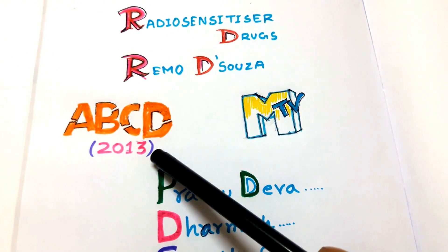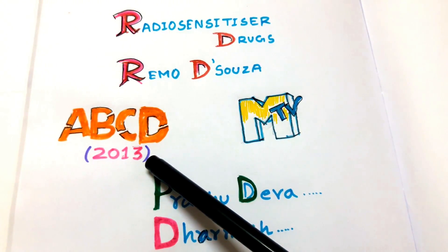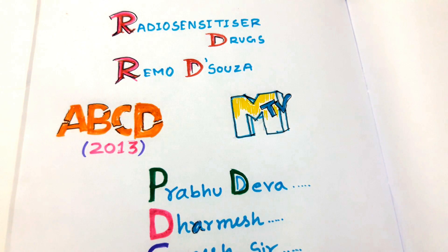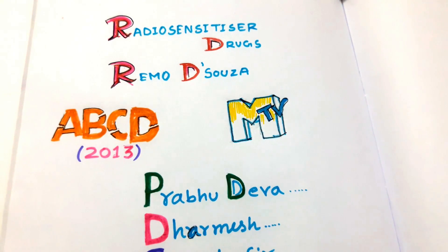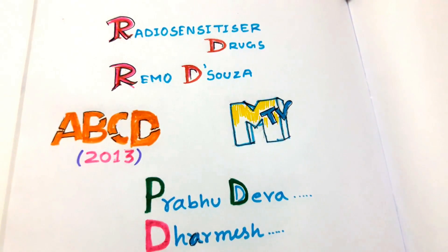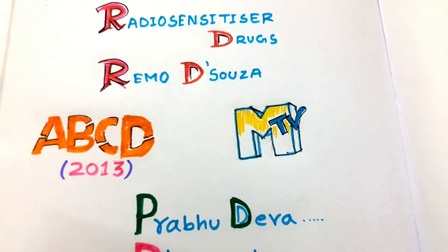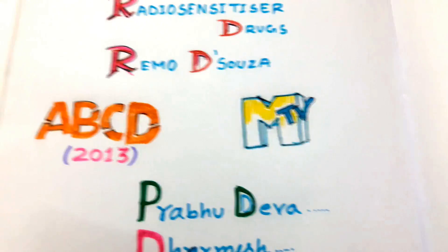So our mnemonic is the ABCD movie by Ramo de Souza, with its TV premiere on MTV and the star cast of the ABCD movie. I hope all of you enjoyed my video — keep watching my mnemonic videos by subscribing to my channel. Thanks for watching.